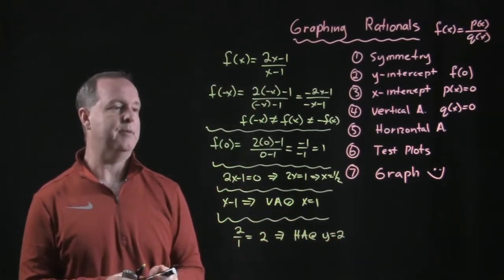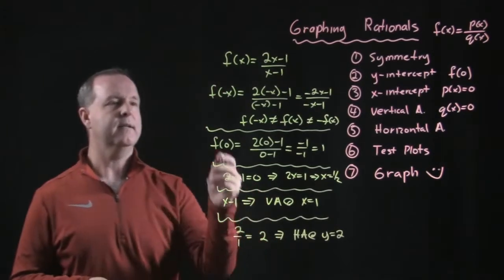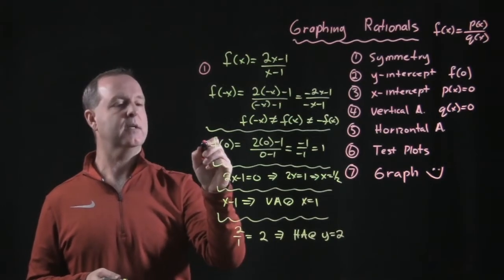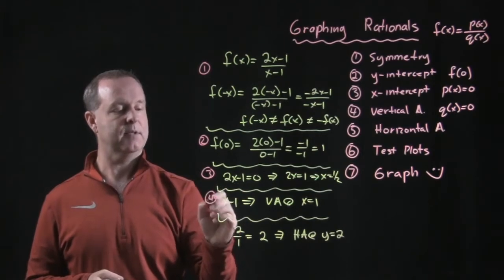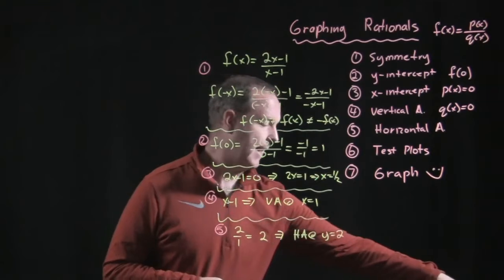All right, let's just recap a little bit what we've done here. So the first thing we did is we tested for symmetry. Second thing we did is we looked for its y-intercepts. Then its x-intercepts. Then a vertical asymptote. And then a horizontal asymptote.